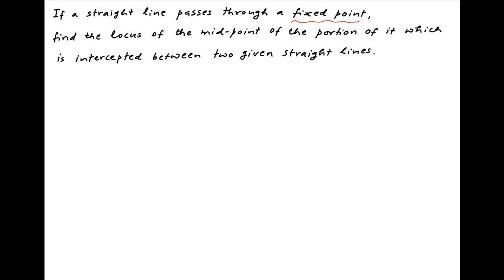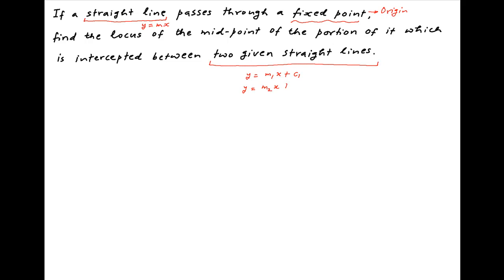Let's assume that the fixed point described in the problem statement is the origin, and therefore the straight line passing through this point can be assumed to be y equals mx. Let's also assume that the two given straight lines in the problem statement have the equations y equals m1x plus c1 and y equals m2x plus c2.